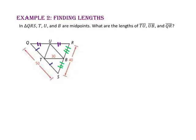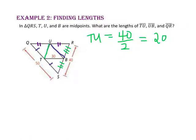Since we know that mid-segments are half the length of the side they are parallel to, segment TU will equal 40 divided by 2, or half of 40, so the length of segment TU is 20. Since segment UB is a mid-segment, it will be half of the length of the side it is parallel to, side QS. So the length of segment UB will equal 50 divided by 2, or half of 50, which is 25.